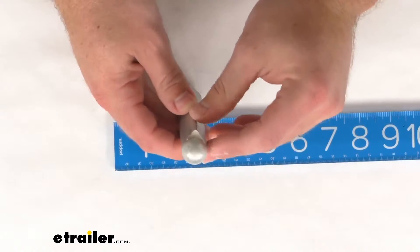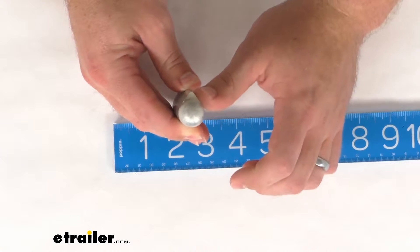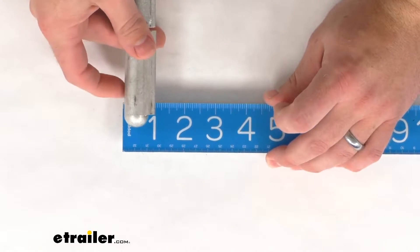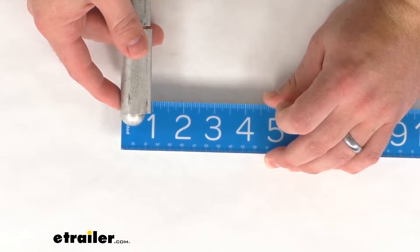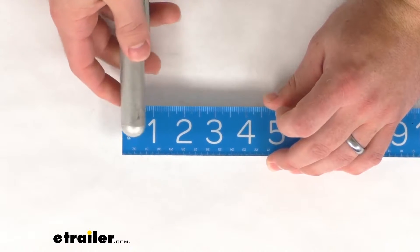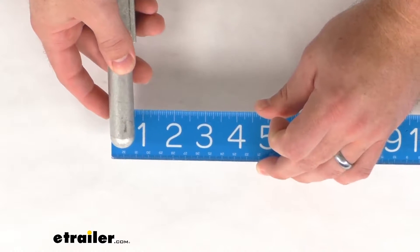We do have the pointed end there that's going to give us the two flat sides so that we can weld this in place. If we include that pointy end, we're looking at right about one inch overall thickness. If we rotate that point away, we're about three-quarters of an inch thick.